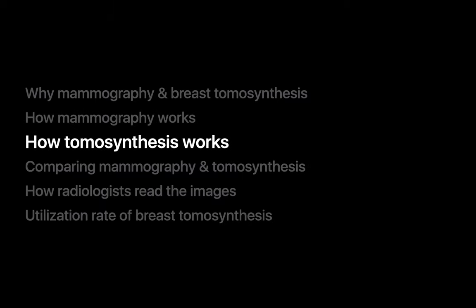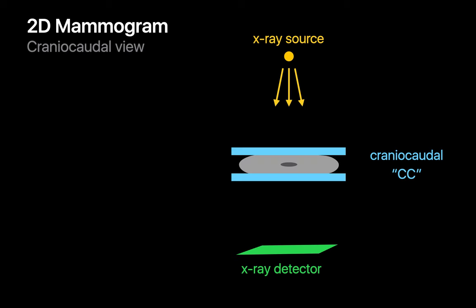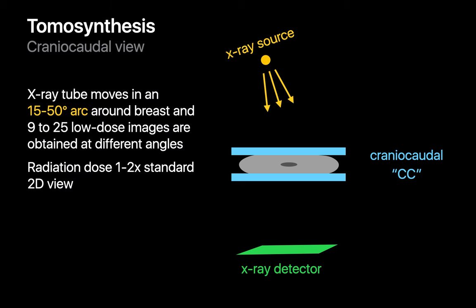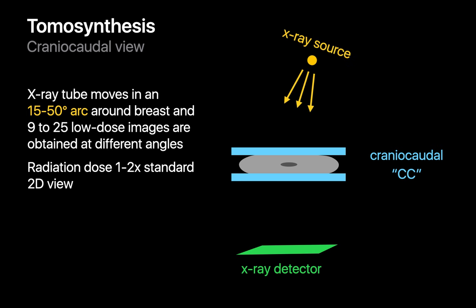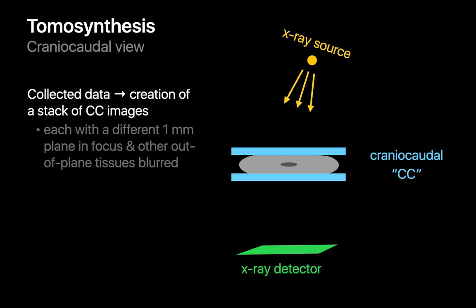So, how does breast tomosynthesis work? Here's the typical setup of a conventional 2D mammogram — I'll choose the CC view. With tomosynthesis in the CC view, the overall setup is similar. However, the x-ray tube moves in a short arc above the breast and multiple low-dose images of the breast are obtained at different points in this arc. The aggregate radiation dose associated with a tomosynthesis acquisition ends up being between one to two times the amount of a standard 2D mammogram acquisition. A computer then takes all of these images acquired from different points in the arc, does some processing, and creates a stack of CC images, each at a different depth of field or plane of focus, typically one millimeter apart.